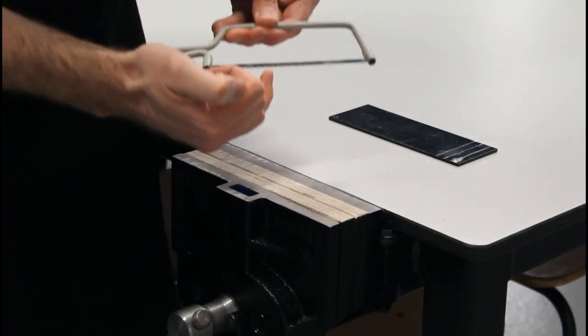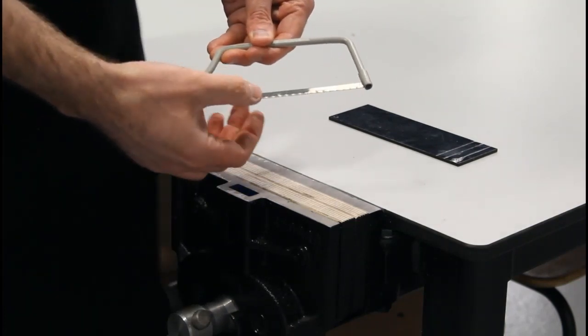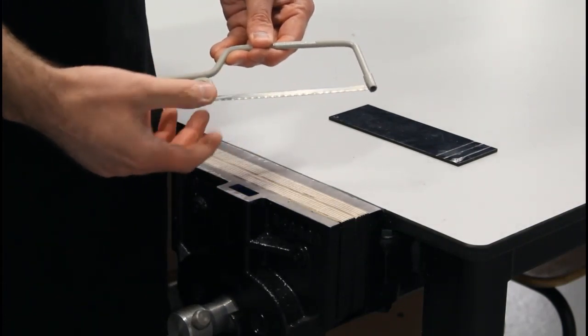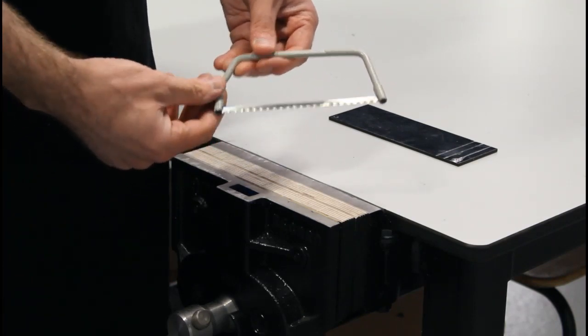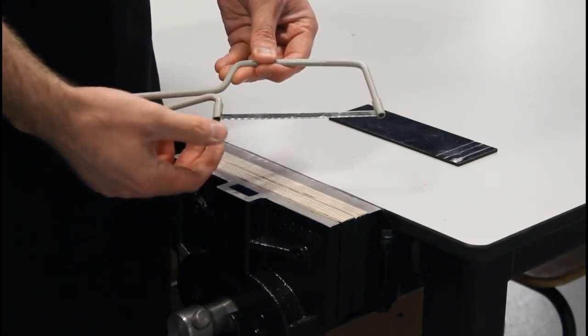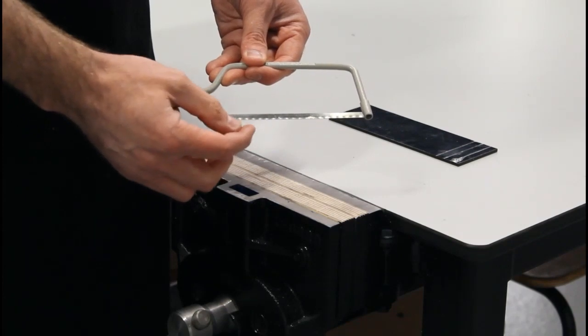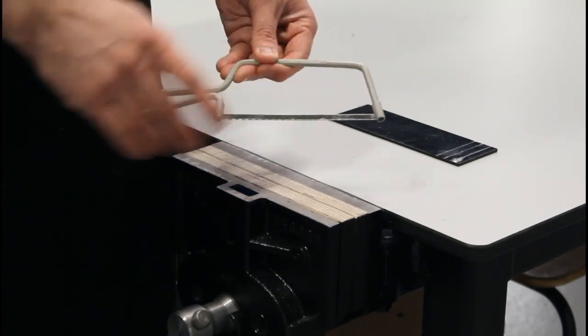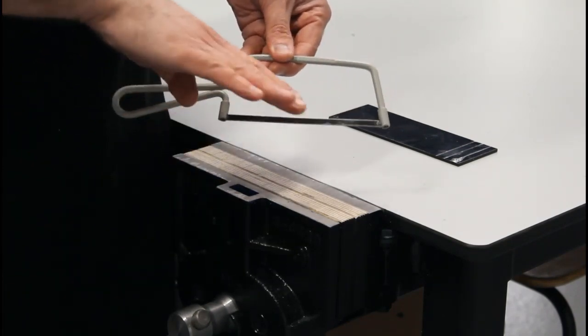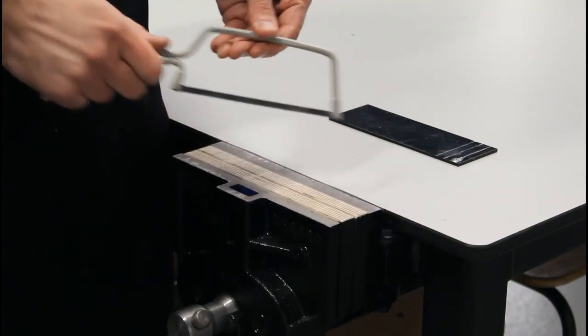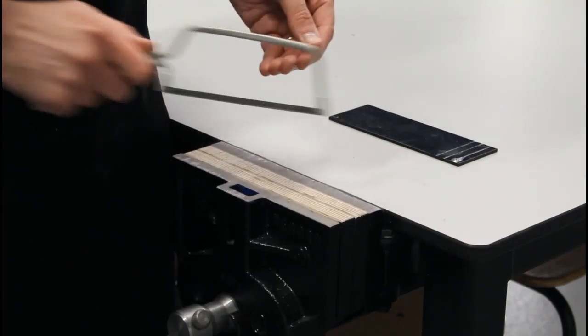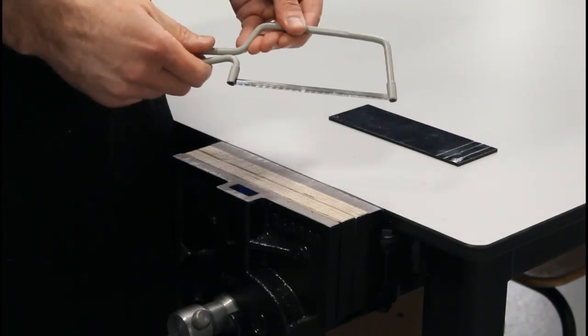The blade has really small teeth on it, used for cutting harder materials like plastics and steel. The teeth are really small and they face forward. So as we're cutting, the teeth are facing this way forward. As we're stroking forward, it's cutting the material going forward.